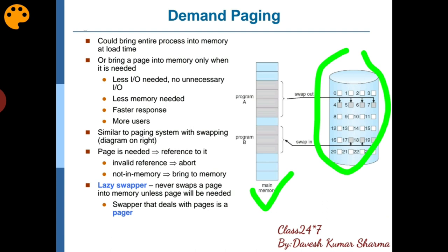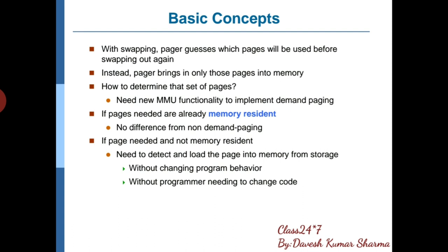अब इसमें दो concepts use होंगे — suppose कि हमारे पास जो physical memory है उसके अंदर page exist कर रहा है कि नहीं। अगर page exist कर रहा है तो वह execute कर रहा है। अगर exist नहीं कर रहा है और उसकी requirement है तो हम उसको swap in कर आएंगे। अब basic concept में — suppose एक page है जिसको swap in कराना है — तो how the pager or lazy swapper will decide कौन से page को move in कराना है किस frame के अंदर, that a system will decide कि कौन से process के किस particular module को execute कराना है।